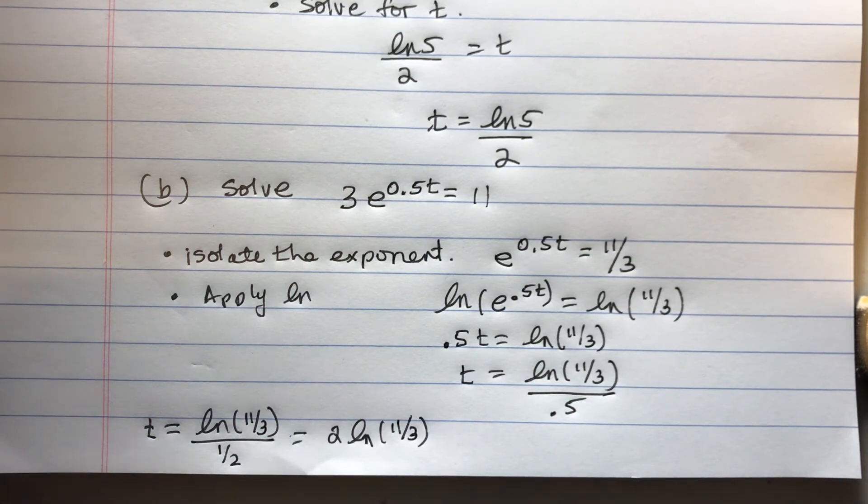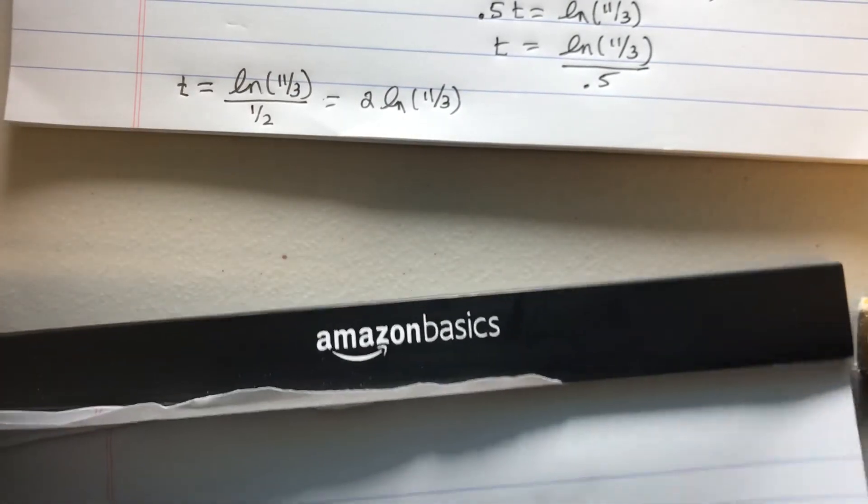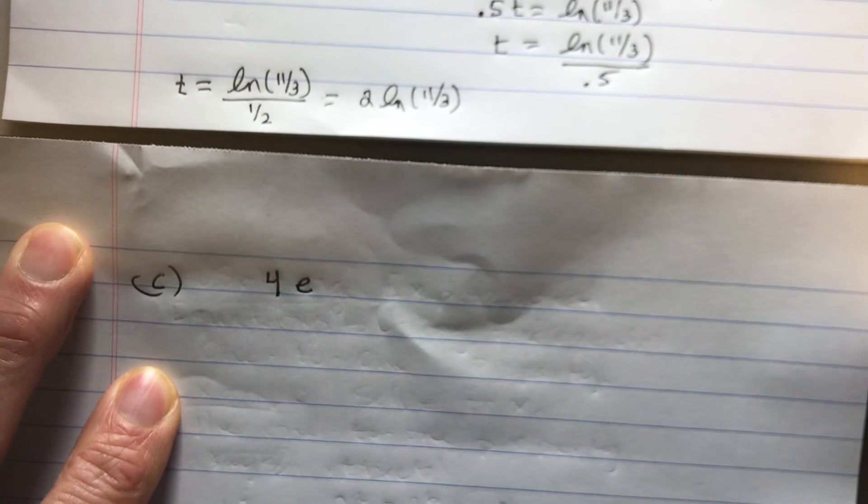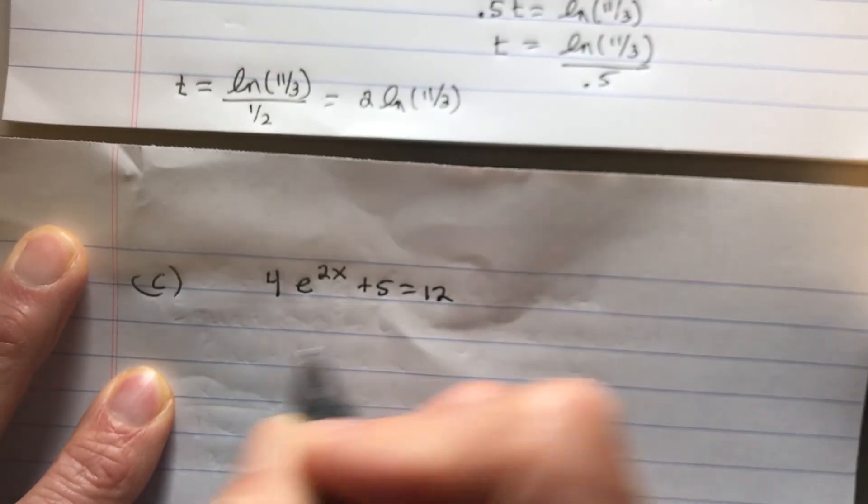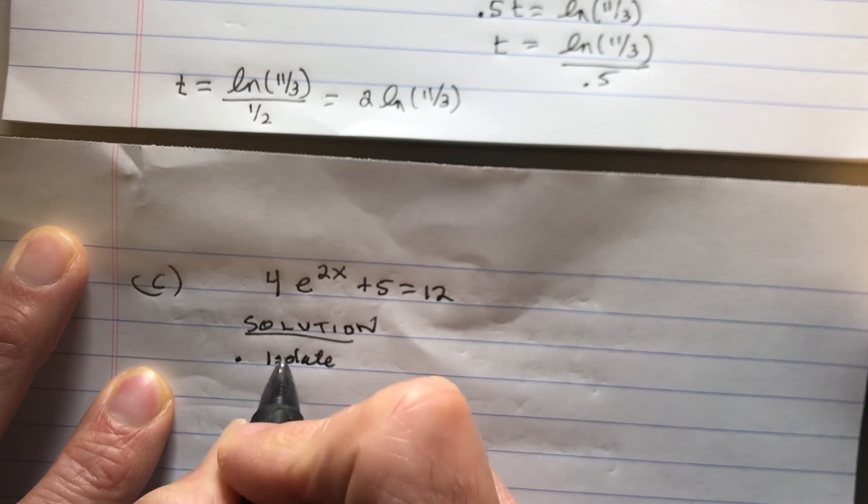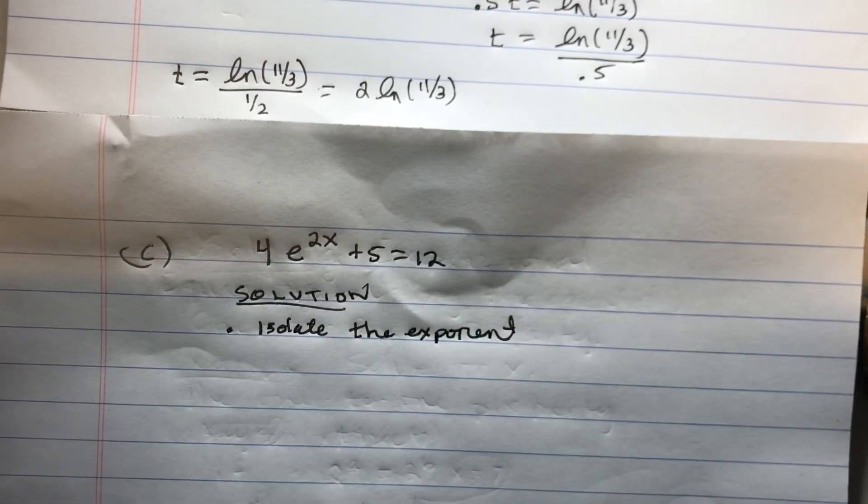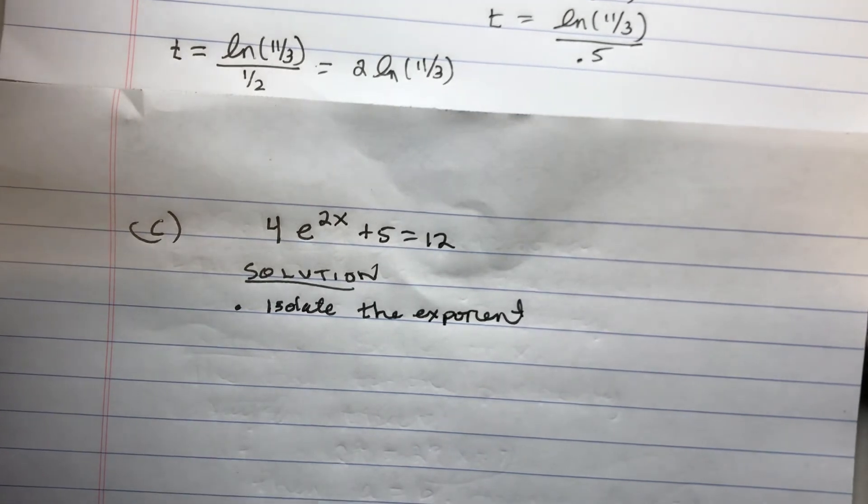Let's maybe do one more, I guess. So let's look at C. 4e to the 2x power plus 5 equals 12. And so, again, what we want to do is isolate the exponent.